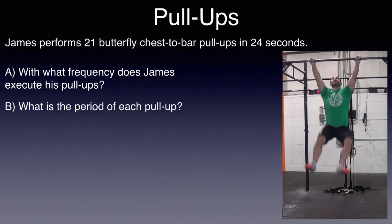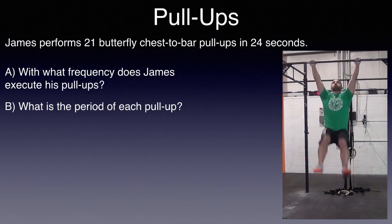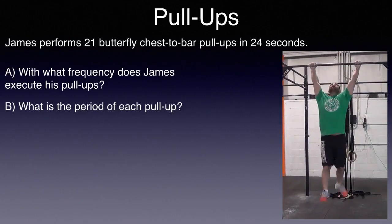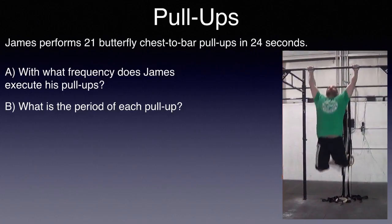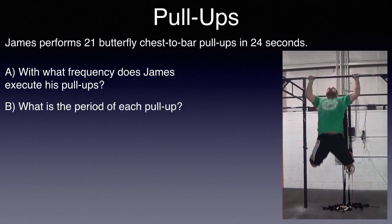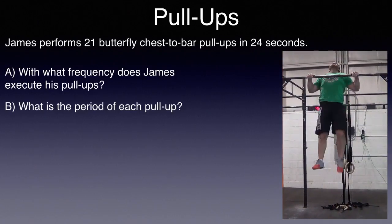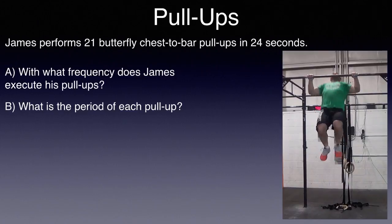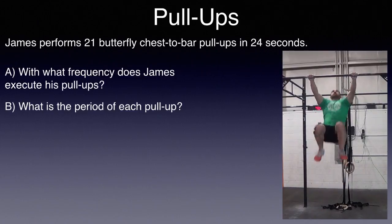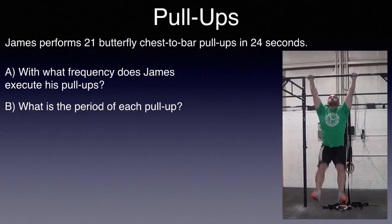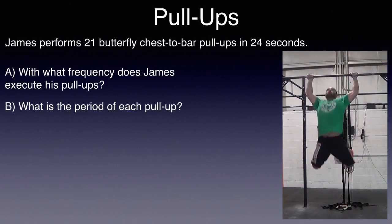James performs 21 butterfly chest-to-bar pull-ups in 24 seconds. A. With what frequency does James execute his pull-ups? And B. What is the period of each pull-up?